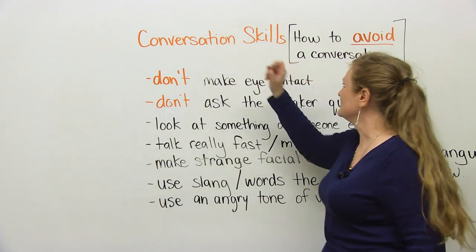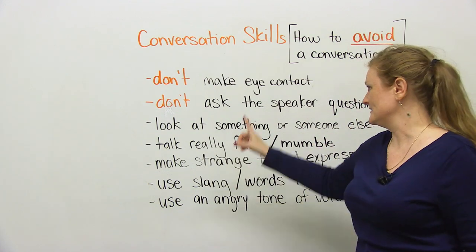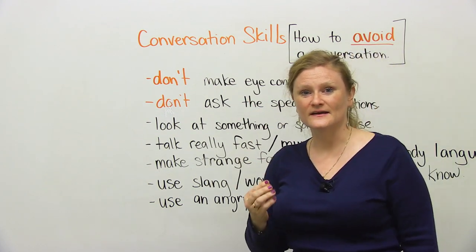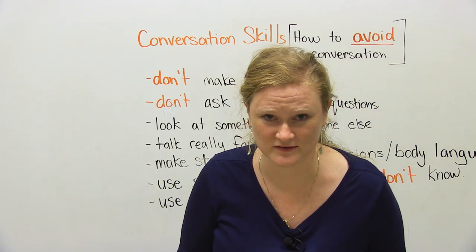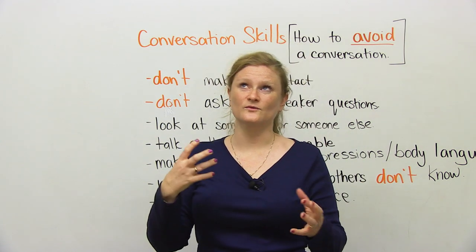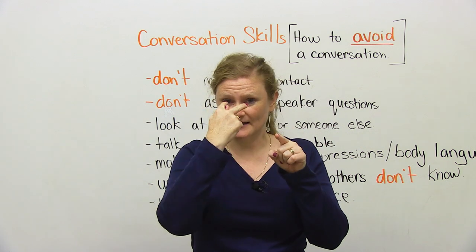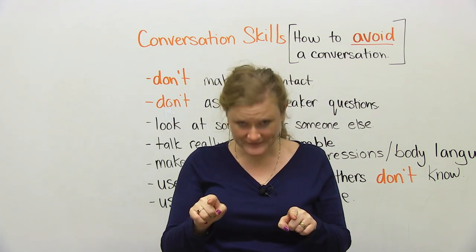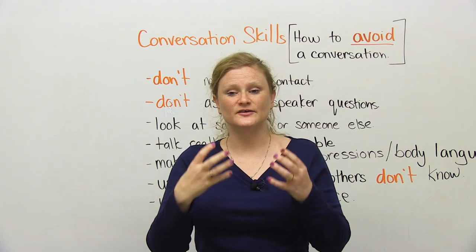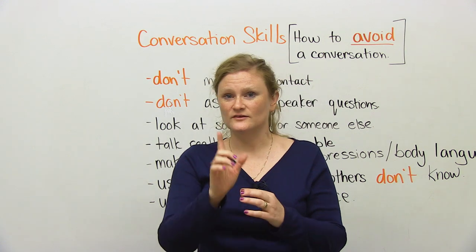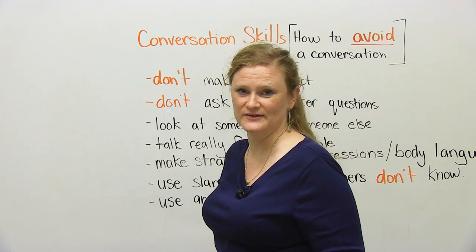So, tips on how to avoid a conversation. Rule number one — very easy: don't ever make eye contact with anyone you do not want to talk to. The number one rule when you want to have a conversation is you must look at people's eyes. So to not have a conversation, don't look anyone in the eye.